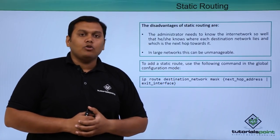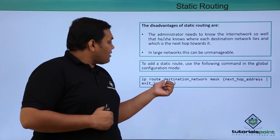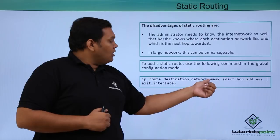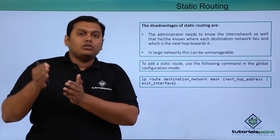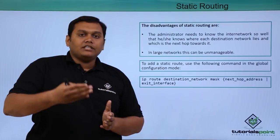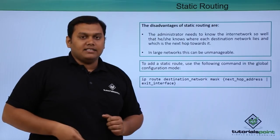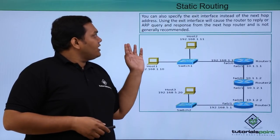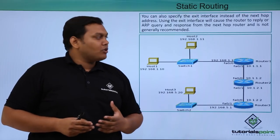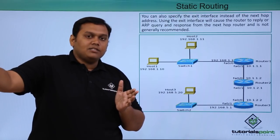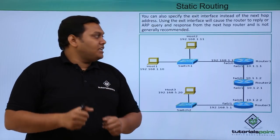To add a static route, we use the following command in global configuration mode. The syntax is: IP route [destination network] [wildcard mask] [next hop address]. The next hop address refers to the next router — router to router is called a hop. You can also specify the exit interface instead of the next hop address, since packets pass through a specific interface.